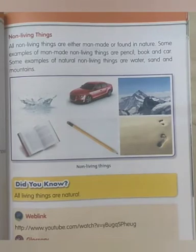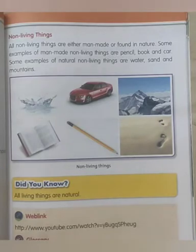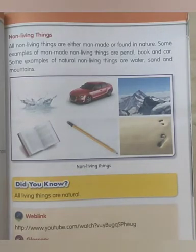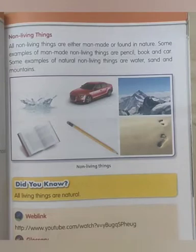If a thing grows, reproduces, needs food, breathes, and can move on its own, it is a living thing. We can check if a thing does not move or does not eat food — they are non-living things.